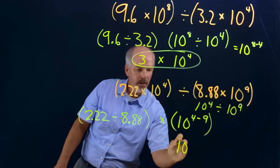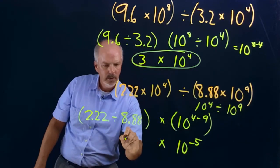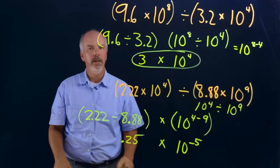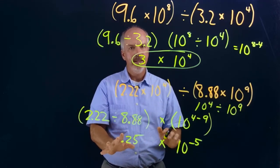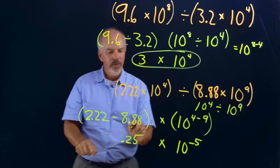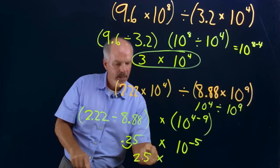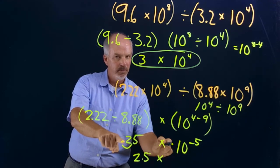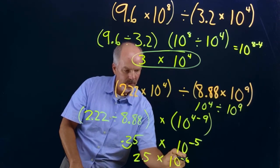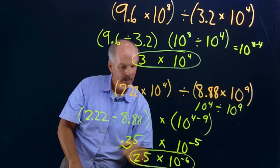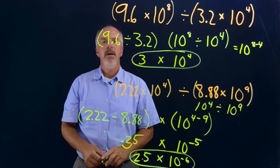So 4 minus 9 equals negative 5, giving us 10 to the negative 5. And 2.22 divided by 8.88 equals 0.25. But remember, the first factor must be at least 1 and less than 10, so we move the decimal one place to the right: 0.25 becomes 2.5. Since this side becomes larger, the power of 10 must decrease — one less than negative 5 is negative 6 — so our answer is 2.5 times 10 to the negative 6.